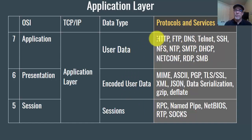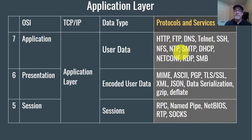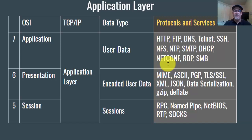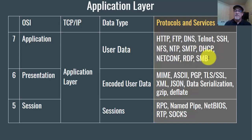The protocols at the application layer include HTTP (web browser and web server), FTP (FTP client and FTP server), DNS (DNS client and DNS server), Telnet, SSH, Network File System, Network Time Protocol, mail via SMTP for sending email, DHCP services (DHCP server and client), Netconf for remotely managing networking devices using Python, RDP (Remote Desktop Protocol), and SMB (Server Message Block) or Samba for file sharing over a network.